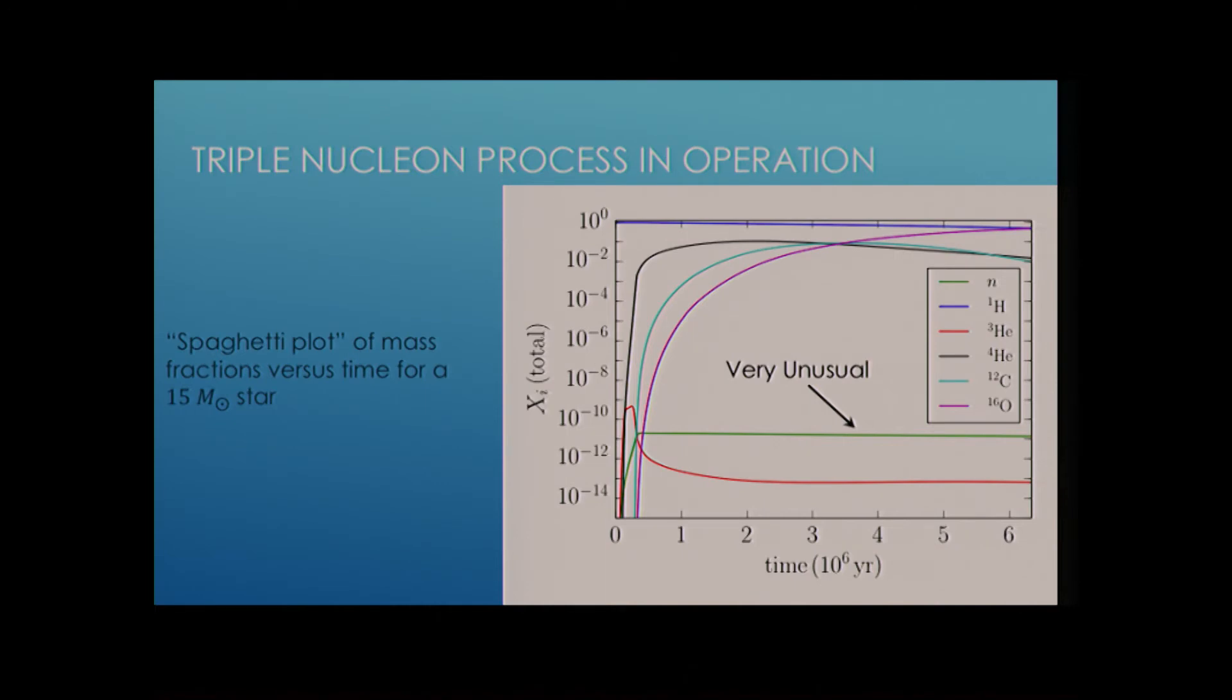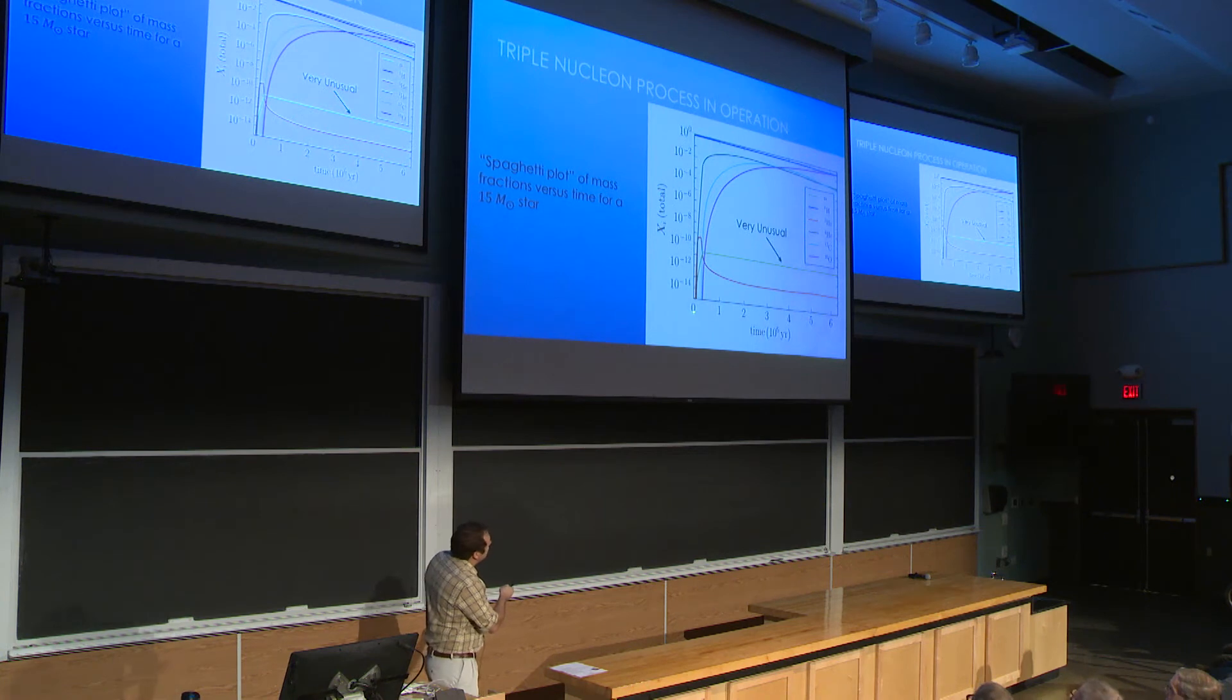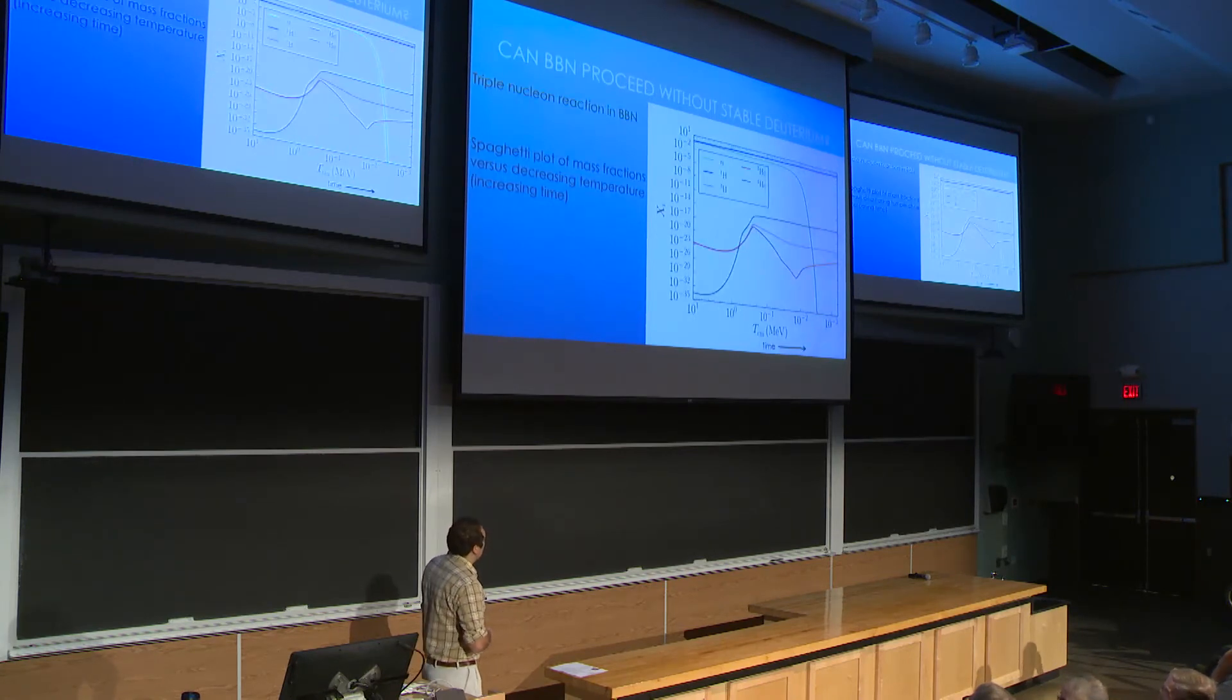So the technical term for this plot is a spaghetti plot since you have all these different lines here on this plot. You have mass fraction on your vertical axis versus the time since the formation of the star. And this is showing how the abundances evolve for a 15-solar mass star. Now just on first glance, this plot doesn't look very unusual. You start with hydrogen. You burn that into helium. You burn that into carbon. You burn that into oxygen. That's very typical of a star. But if you actually look at this a little bit more closely, what you can see here is you have a sea of free neutrons in a star, which is not at all typical of any star in this universe. But this is a way to get past the deuterium bottleneck.